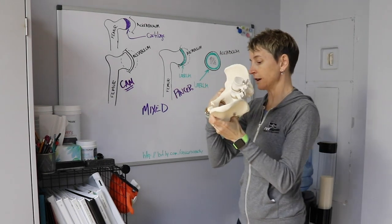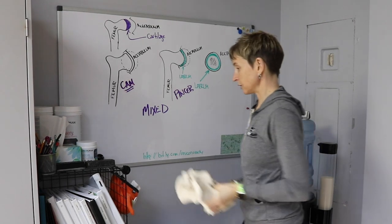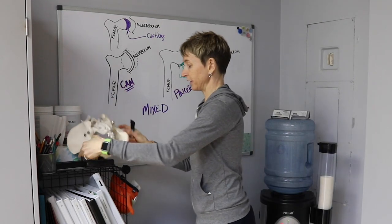So it's the head of the femur and the acetabulum. That's what makes up your hip joint. I'll just put my pelvis right there.